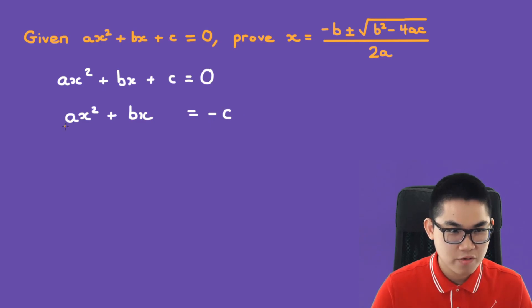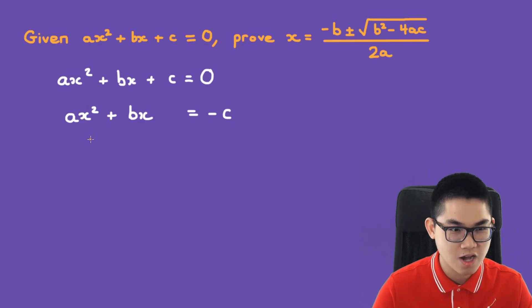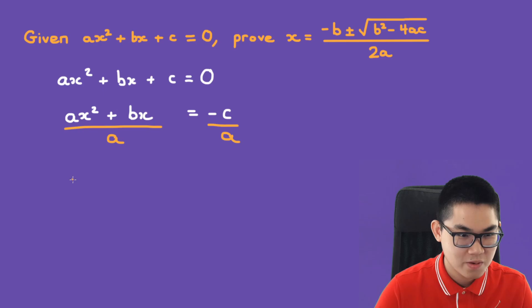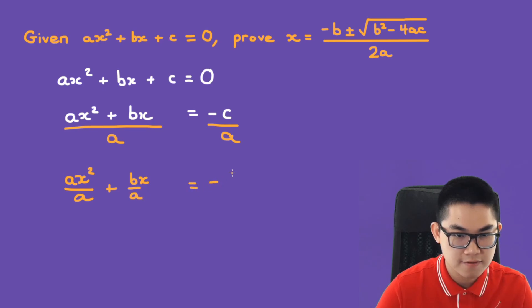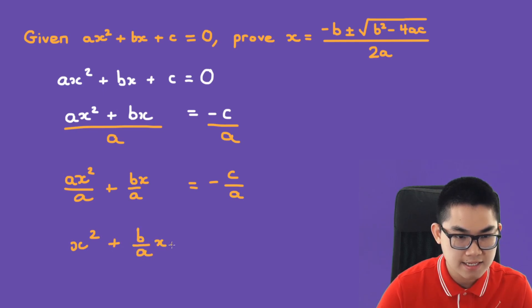We want to get rid of the coefficient in front of the x squared, so we only have x to solve. We divide both sides by a: ax squared over a plus bx over a is equal to negative c over a. That gives us x squared plus b over a times x, and that's equal to negative c over a.